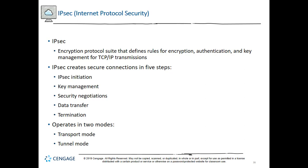Fourth is data transfer: after the parameters and encryption techniques are agreed upon, a secure channel is created for secure transmissions until the channel is broken. Last is termination — IPsec requires regular reestablishment of a connection to minimize the opportunity for interference. The connection can be renegotiated and reestablished before the current session times out. IPsec operates in two modes: transport mode, which connects two hosts, or tunnel mode, which runs on routers or other connectivity devices in the context of VPNs.